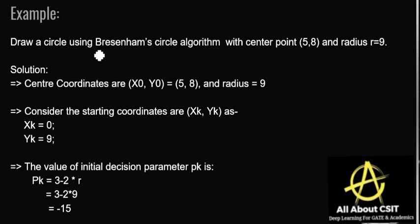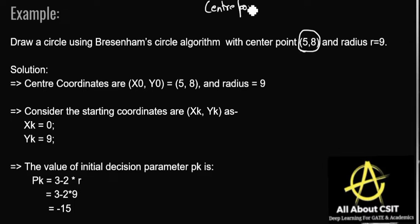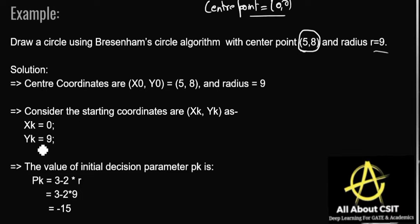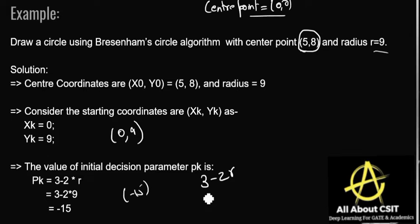Now let's look at the example. Draw a circle using the Bresenham circle algorithm with center point (5, 8) and radius 9. In the previous video on midpoint circle drawing algorithm I used center point at the origin (0,0), but here the center is (5,8) and radius is 9. The starting coordinates are xk=0 and yk=r, so (0, 9). The initial decision parameter is 3 − 2r = 3 − 2(9) = 3 − 18 = −15.